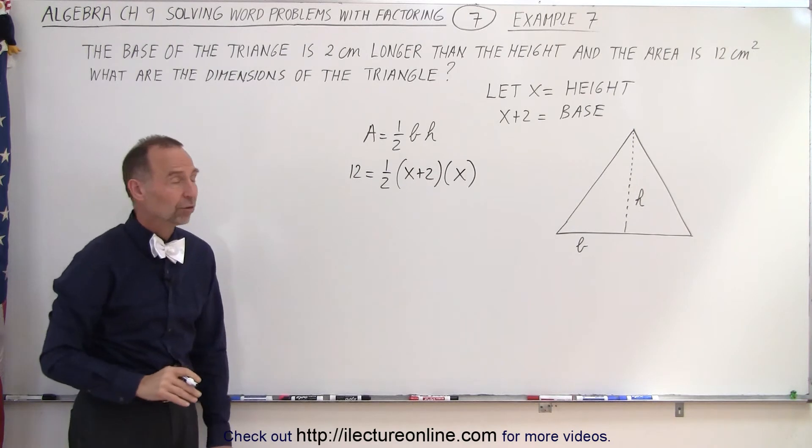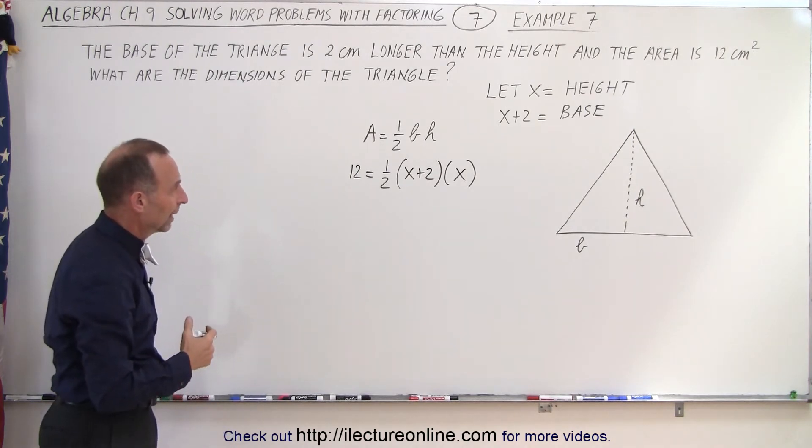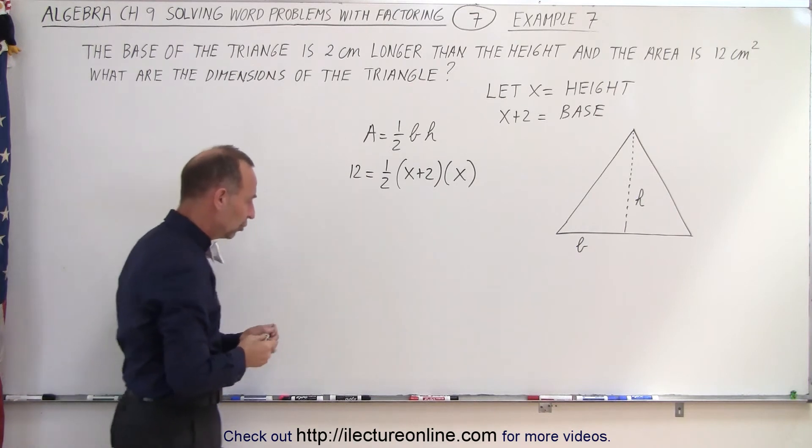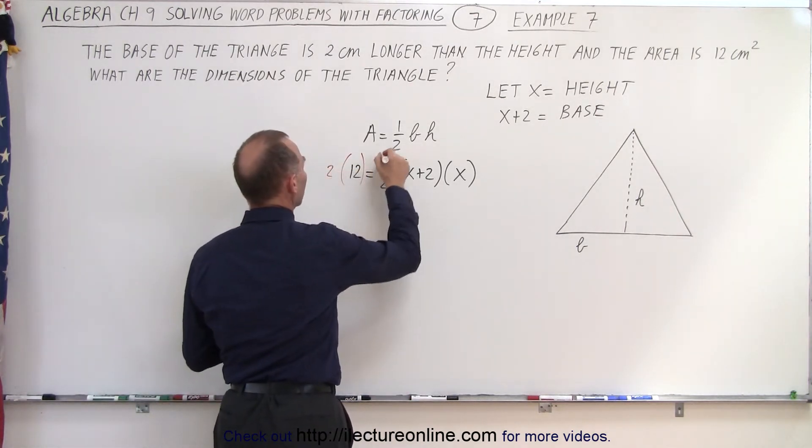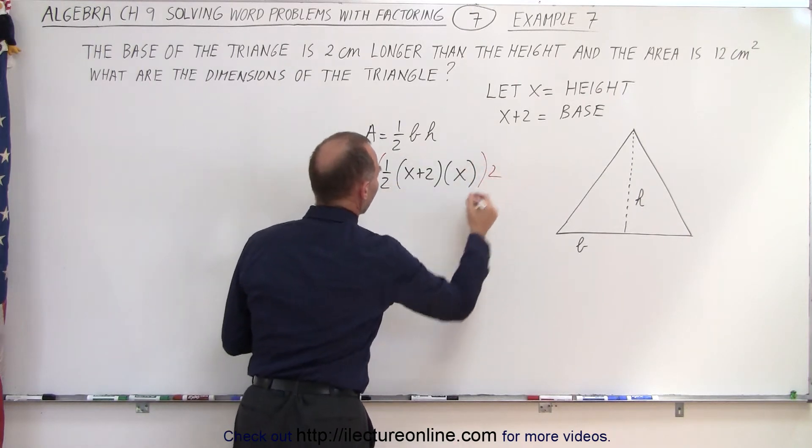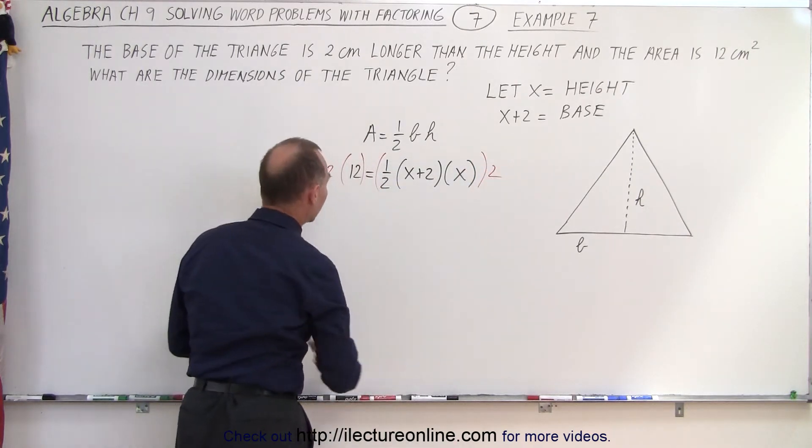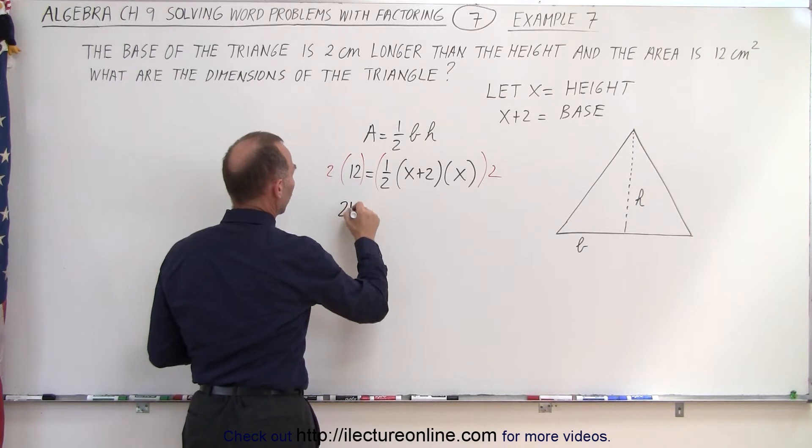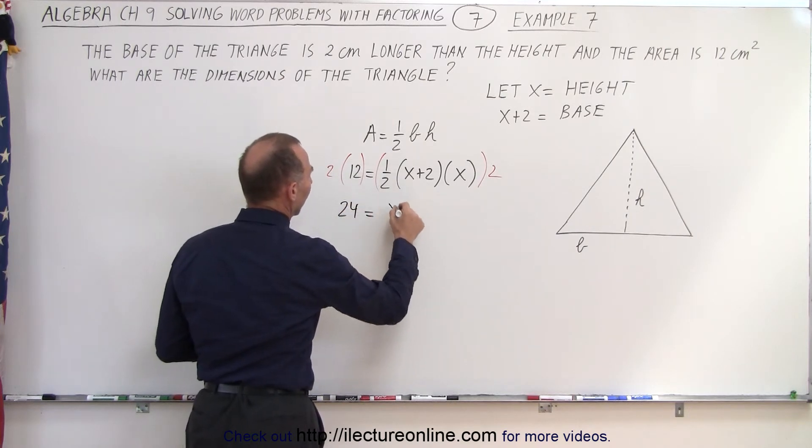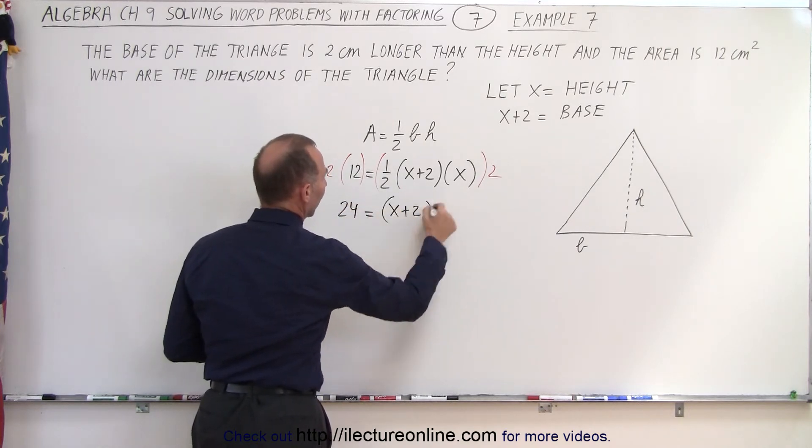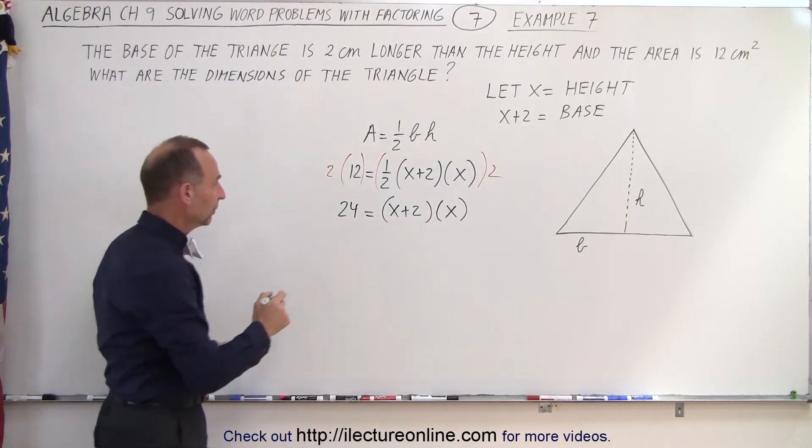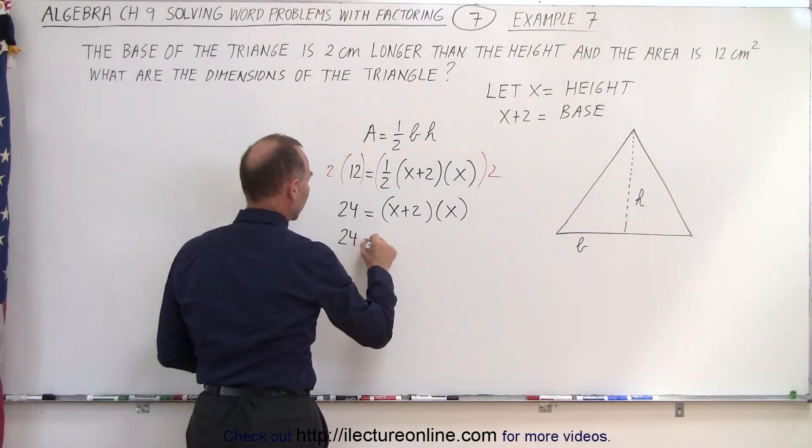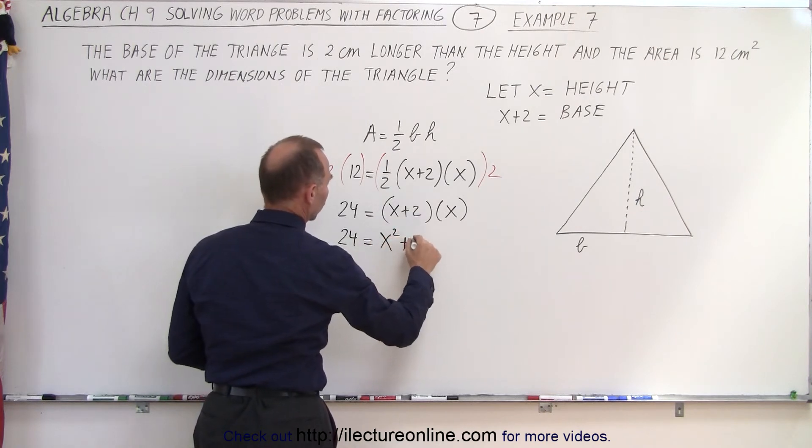Here we have a quadratic equation, which we must solve for x. First, let's multiply both sides of the equation by 2 to get rid of the fraction. When we do that, we get 24 equals x plus 2 times x. Now the fraction is gone. We can multiply everything together. We get 24 equals x squared plus 2x.